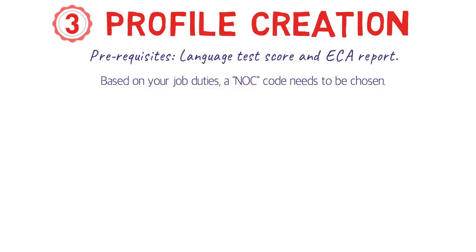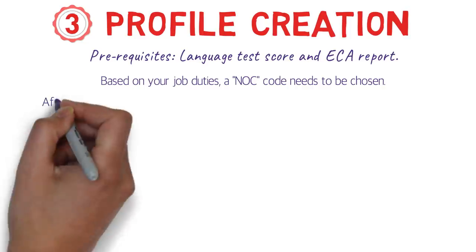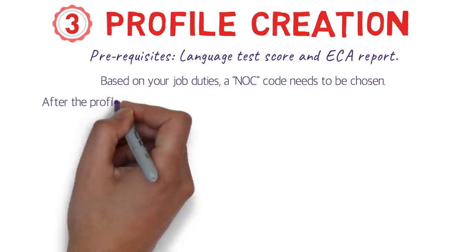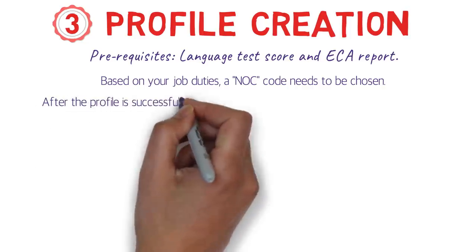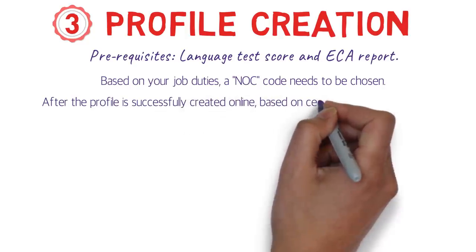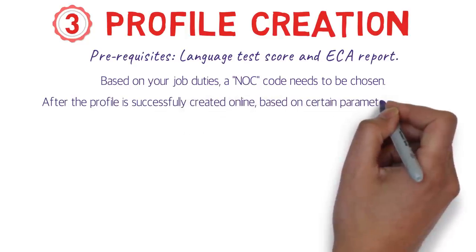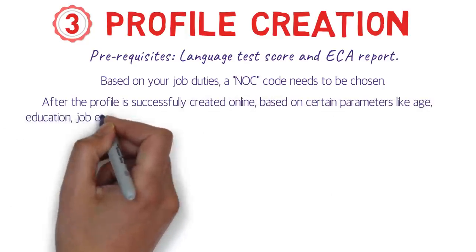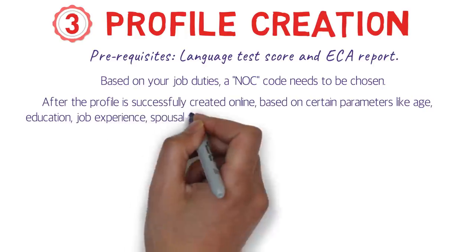For example, in the IT industry, a Java developer would have a different NOC code from a manual tester, someone in DevOps, or an automation engineer — each role has its own distinct code.